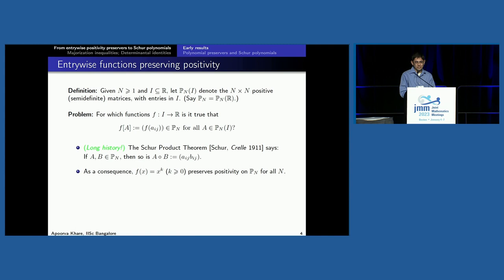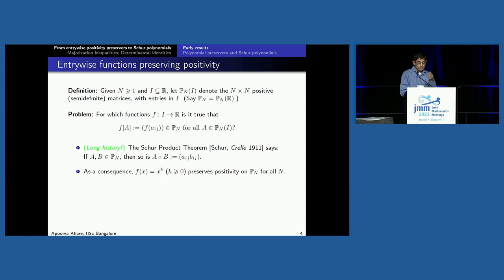The Schur product theorem in analysis says that if A and B are two positive matrices, then so is their entrywise product. The usual product of two symmetric matrices may not be symmetric, but the entrywise product is. Now, if you have two functions satisfying this preserving condition, and you take f(A) and g(A) both positive, then their entrywise product is f times g of each entry. So the set of functions that preserve positivity is closed under pointwise multiplication. As a consequence, since 1 and x lie in the class of preservers, so does x², x³, and so on — f(x) = x^k preserves positivity.